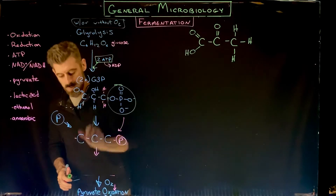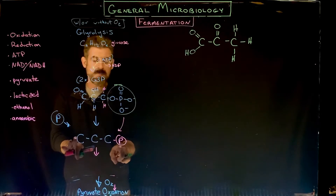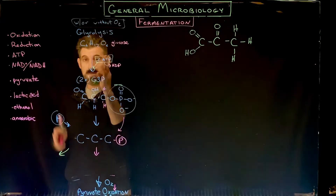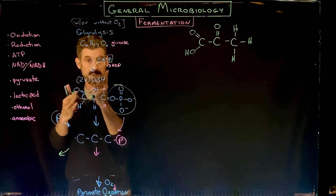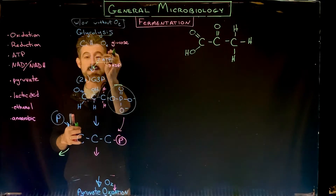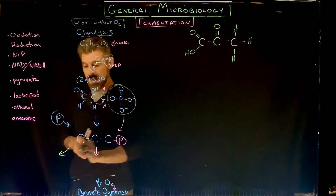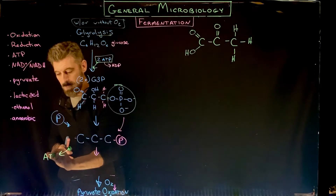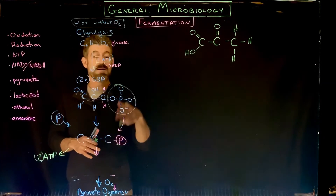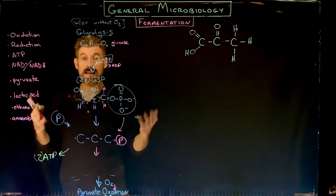If I only had one phosphate attached, I could make one ATP from it. But there are going to be two of these molecules because glucose is six carbons - glycolysis splits it into two three-carbon molecules. That would yield some ATP - actually two ATP coming directly from those phosphates - but that gains nothing net from that process alone.